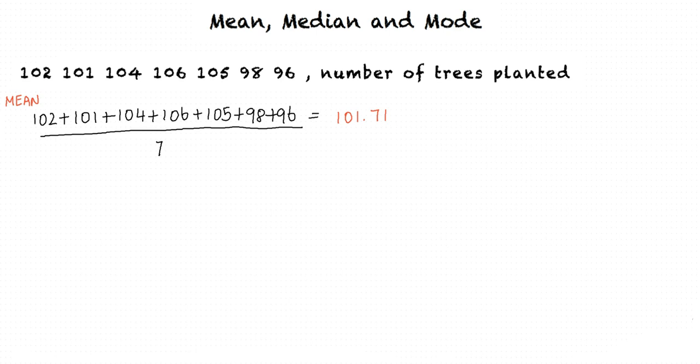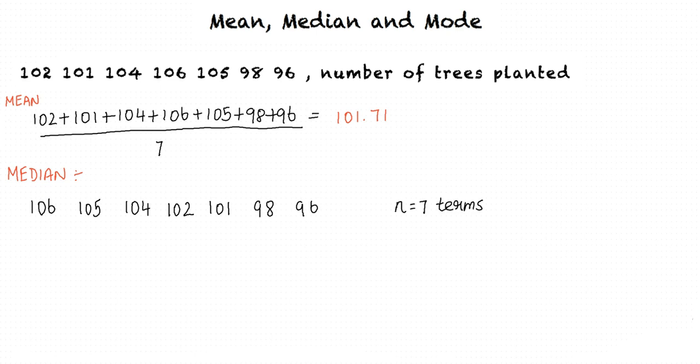Next, in order to calculate the median, we sort the data in ascending or descending order. Arranging the data in descending order, we get: 106, 105, 104, 102, 101, 98, and 96. The number of terms n equals 7, which is odd. Thus the median is the middle value, which is the fourth term: 102.